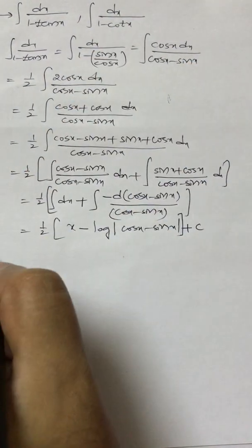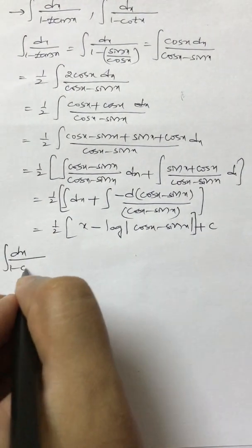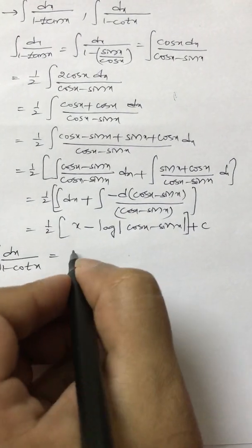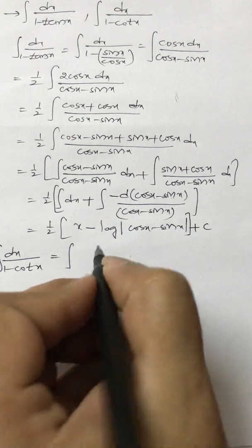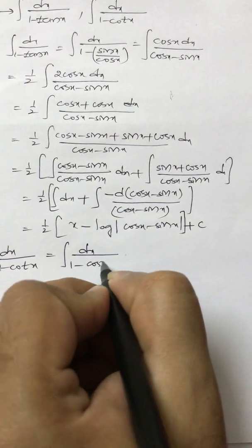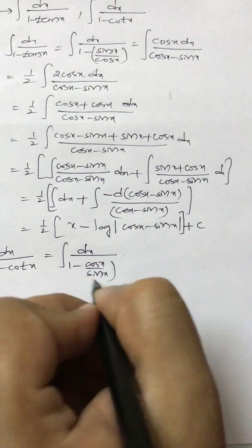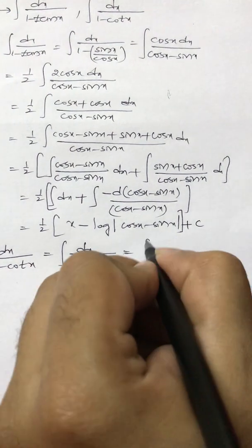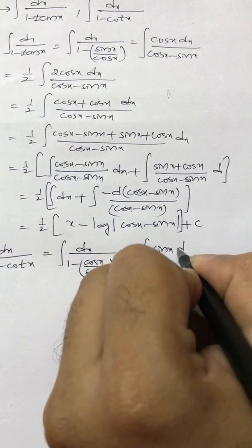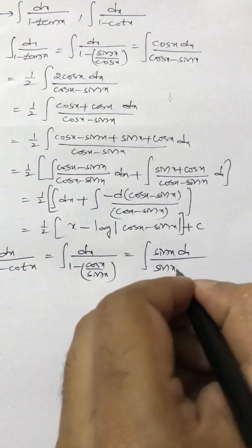Now looking at integral dx by 1 minus cot x. Again I will write cot as cos by sin, so 1 minus cos x by sin x. This gives us integral sin x dx by sin x minus cos x.